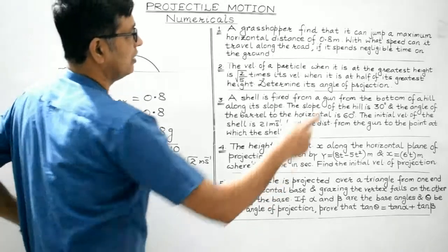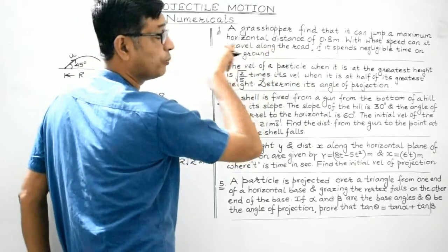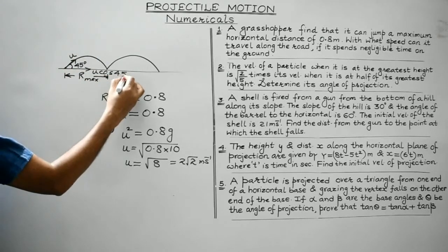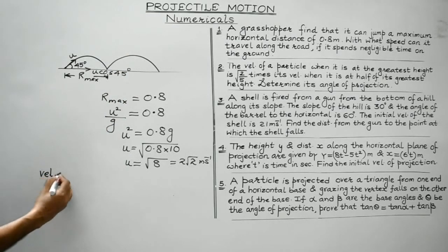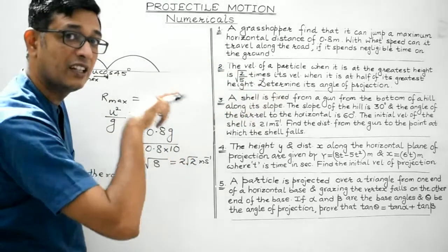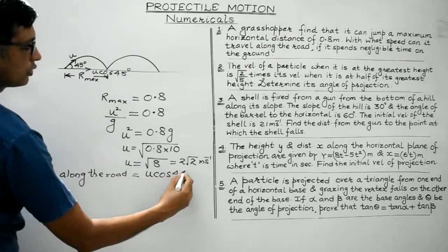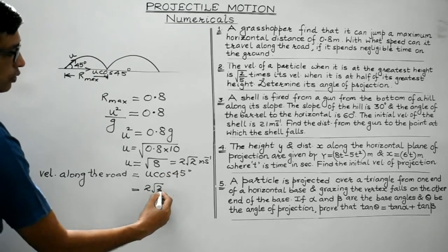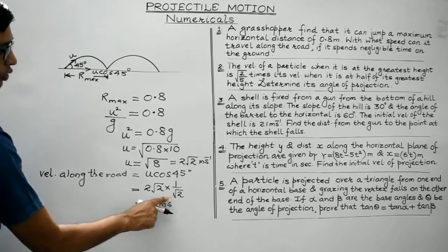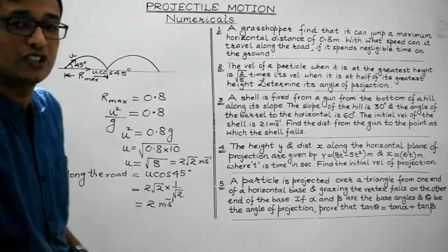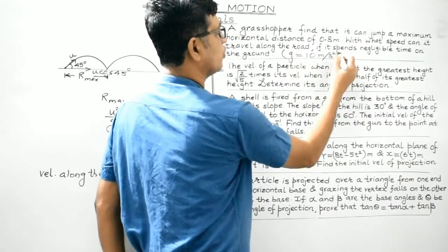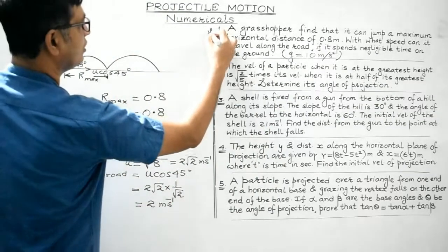But in the question, we are not supposed to find the value of u. We are supposed to find the velocity of the grasshopper along the road. Along the road, the velocity would be u cos 45°. So u is 2√2 m/s and cos 45° = 1/√2, giving an answer of 2 meters per second. So the velocity of the grasshopper along the road is 2 meters per second, with g taken as 10 m/s². This was a very interesting question.